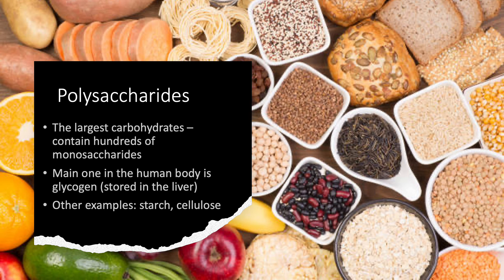The next category is polysaccharides — poly means many, so this is many sugars, with hundreds of monosaccharides combining to form the largest carbohydrates. The main polysaccharide in the human body is glycogen. For example, if you had an apple for breakfast, your body takes some of that glucose and stores it as glycogen in your liver. When you get hungry and blood glucose dips, that glycogen gets converted back to glucose for your body to use.